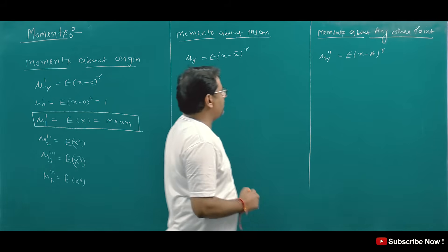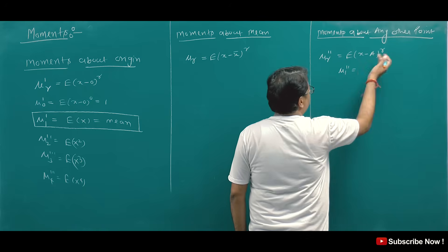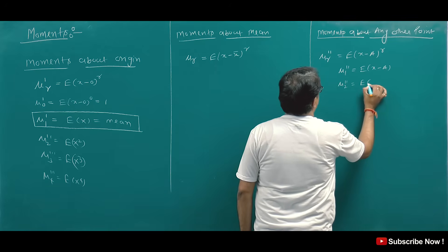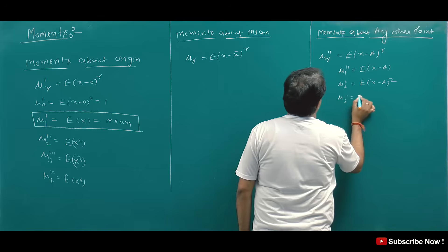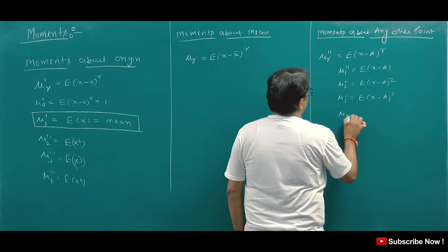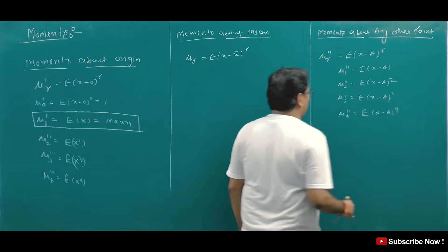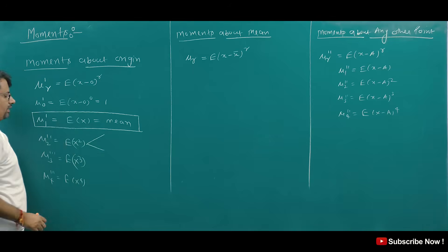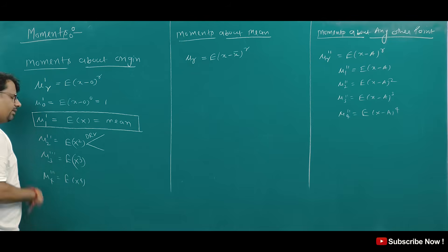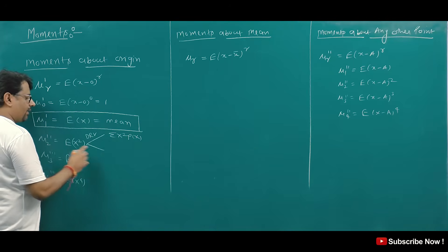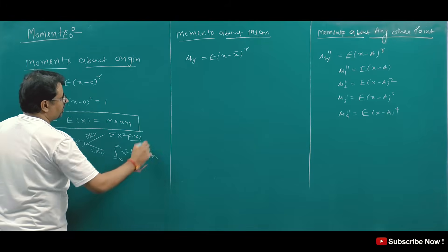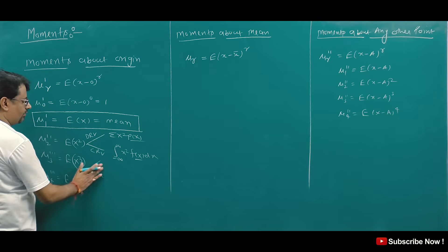Now, there are two cases. If we have a discrete random variable, we use summation of x squared times p(x). If we have a continuous random variable, we use integration from minus infinity to infinity of x squared times f(x) dx. Here p(x) is the PMF and f(x) is the PDF. This same process applies — for x cubed we use x cubed, and for x to the power 4 we use x to the power 4.